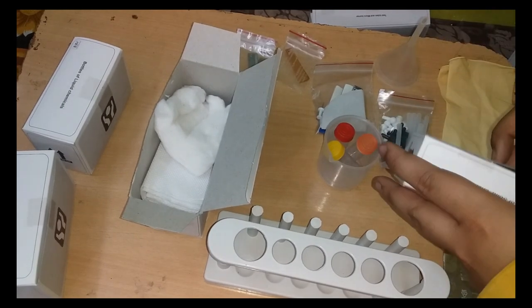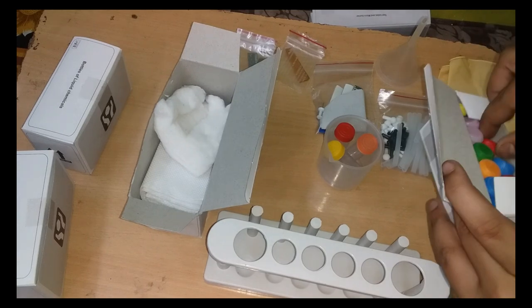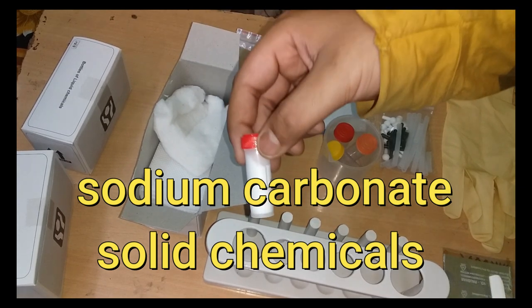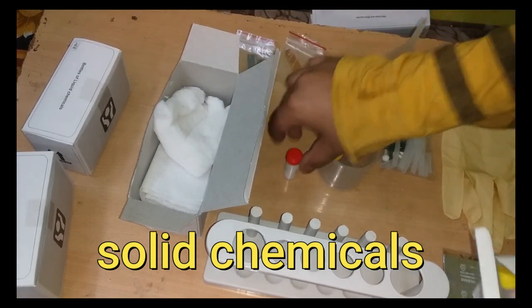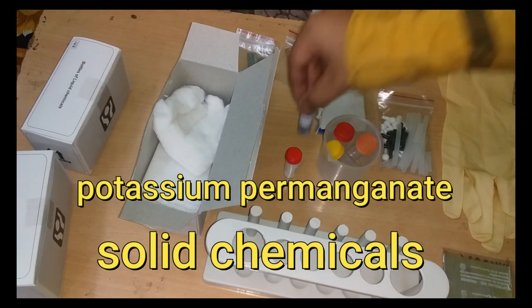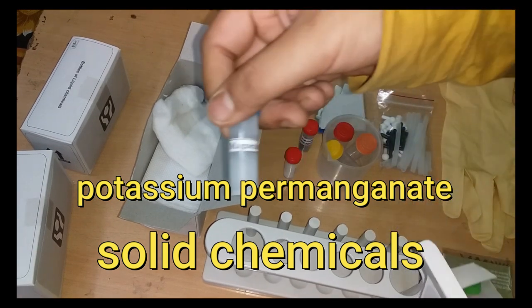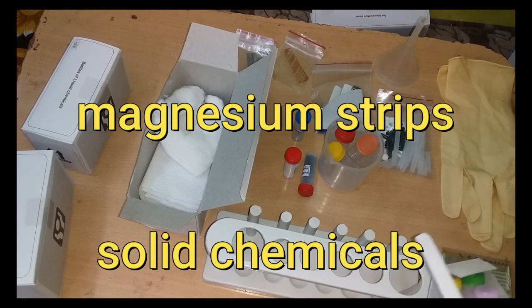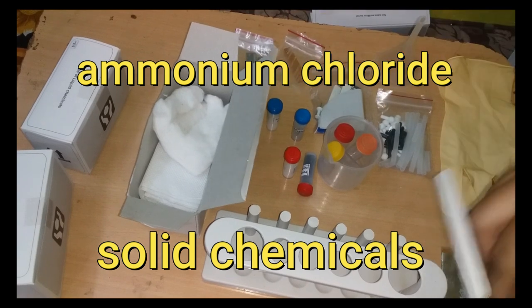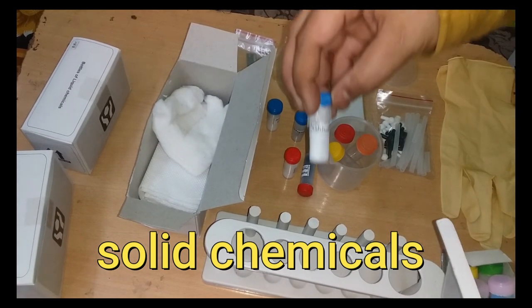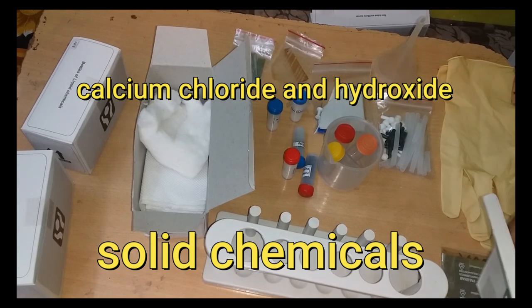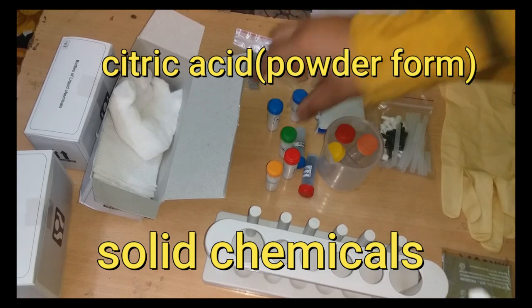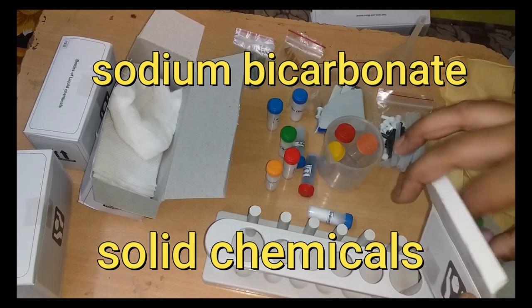Now I will be unboxing the bottles of solid chemicals. Sodium carbonate is the first chemical I unboxed. Potassium permanganate, magnesium strips, ammonium chloride. This is calcium chloride and calcium hydroxide. This is citric acid powder form. Sodium bicarbonate - baking soda.